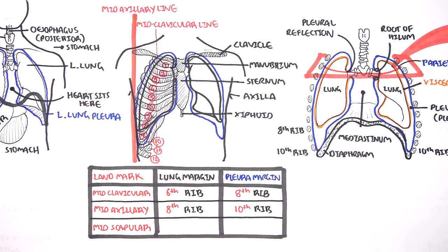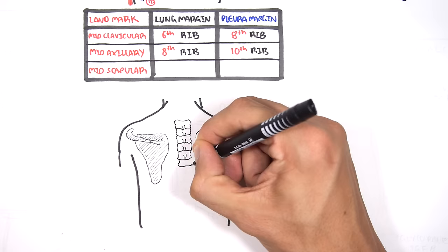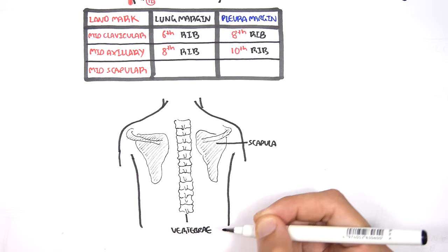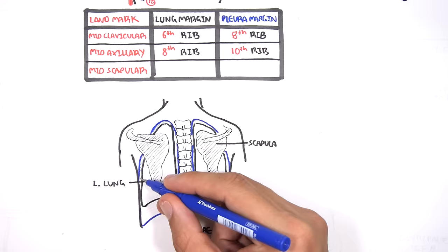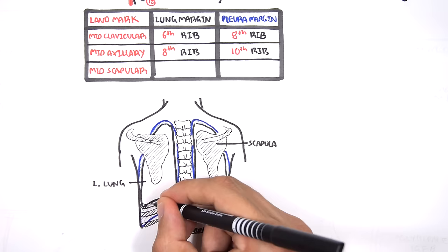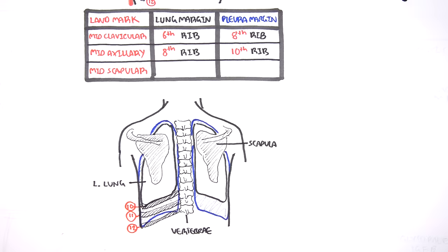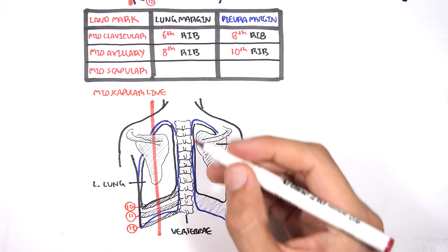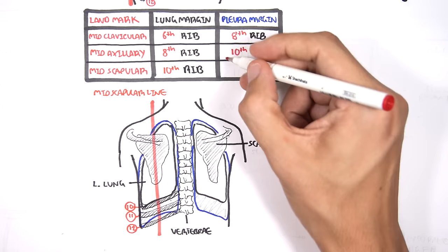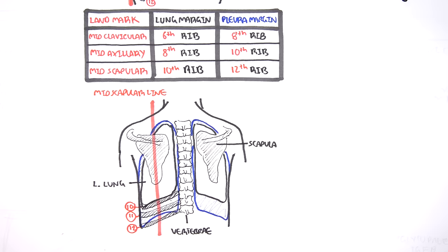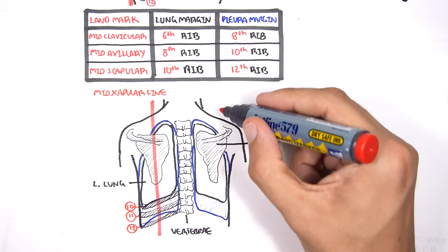Now let us draw a posterior view of the body and look at more body landmarks to outline the lung margins and the lung pleura from the back. Looking at the back of the person, you can find the scapula and the vertebral spine. In front of the scapula and vertebrae you have the right and left lung and the pleural membrane. Coming off the thoracic vertebrae you have the ribs — here are ribs 10 to 12. Drawing a line down the middle of the scapula gives you the mid-scapular line. The lung margins finish at about the 10th rib in the mid-scapular line, and the pleura finishes about two ribs below this, at rib 12. The mid-axillary line is the imaginary line running through where your axilla is, on your side.